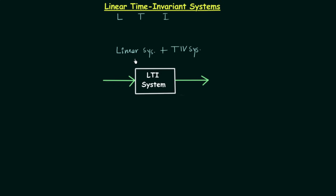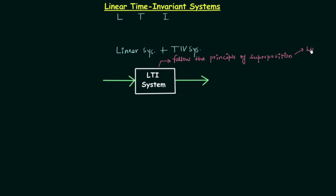LTI is a combination of linear and time invariant systems, and therefore an LTI system will possess the properties of both. We already know that linear systems follow the principle of superposition, so the LTI system will also follow the principle of superposition. This means the LTI system will satisfy both the law of additivity and the law of homogeneity.